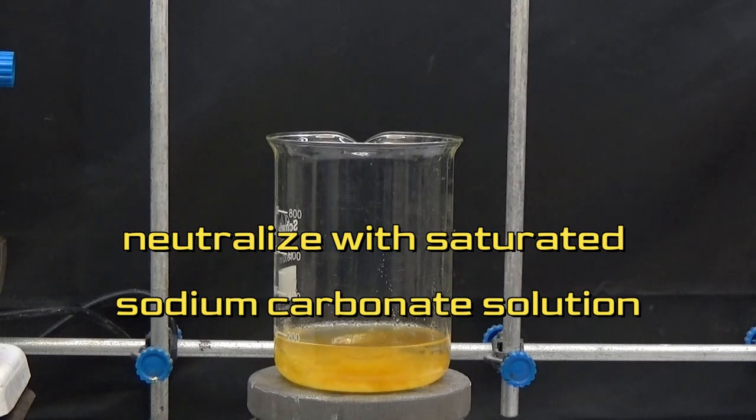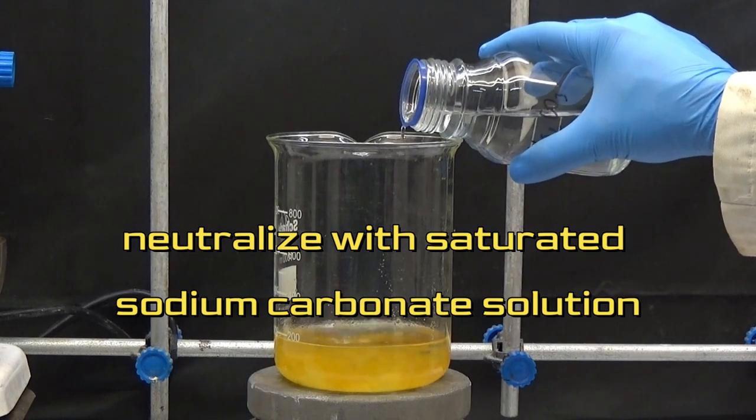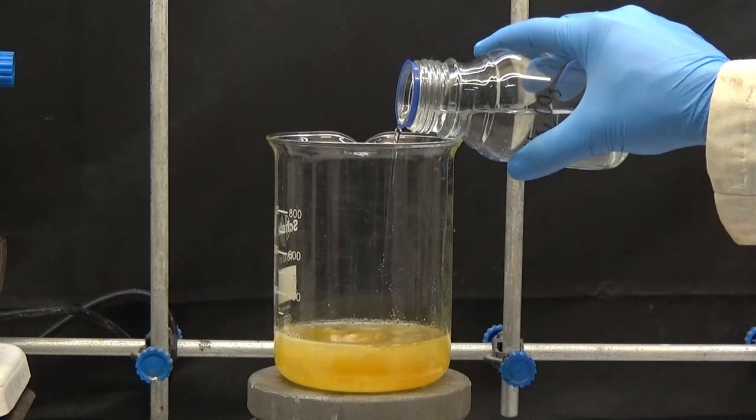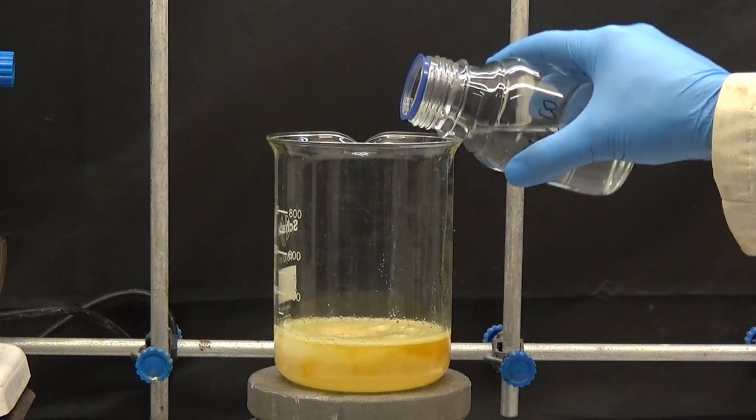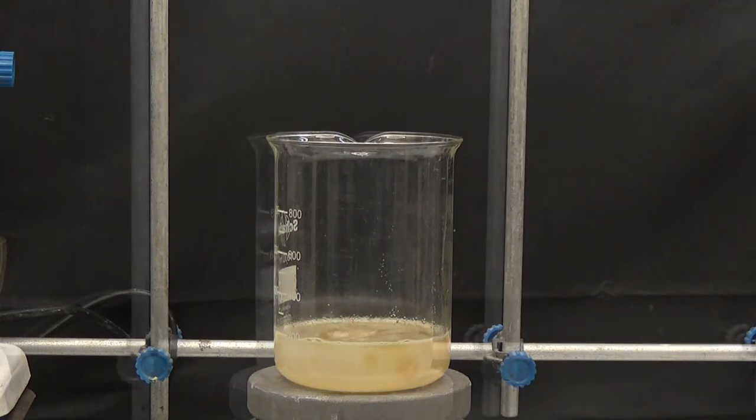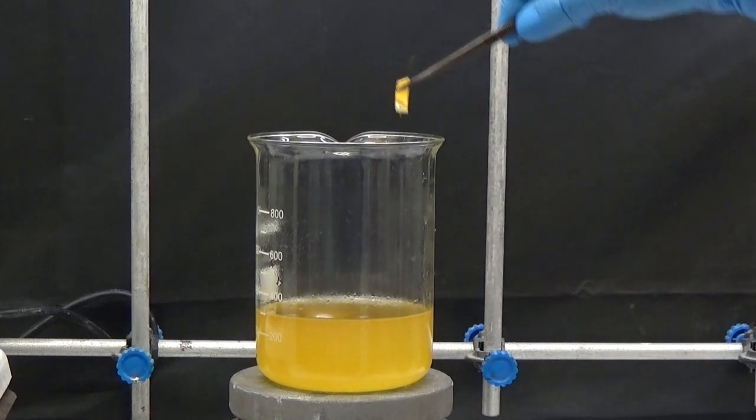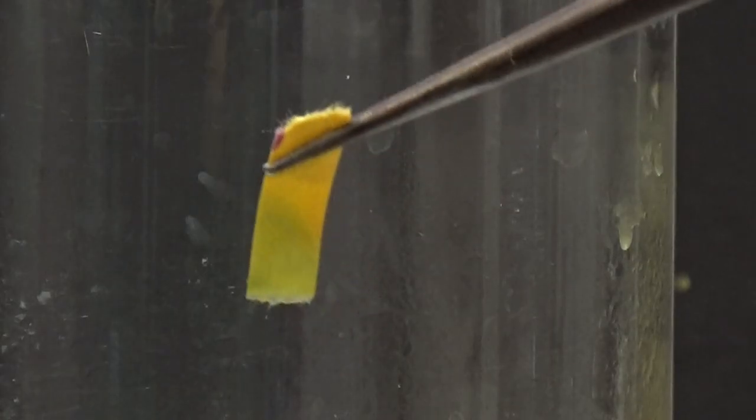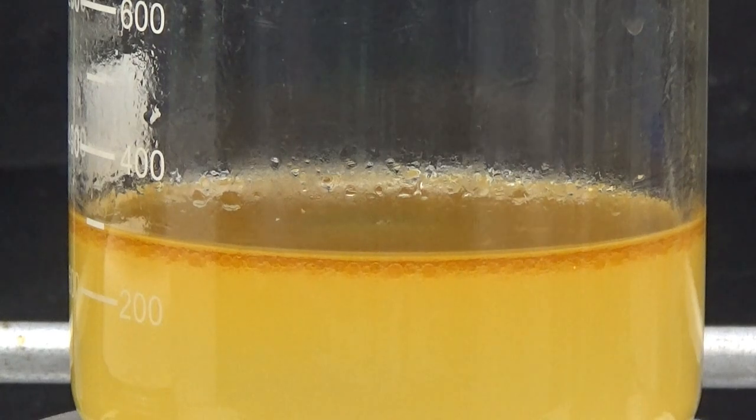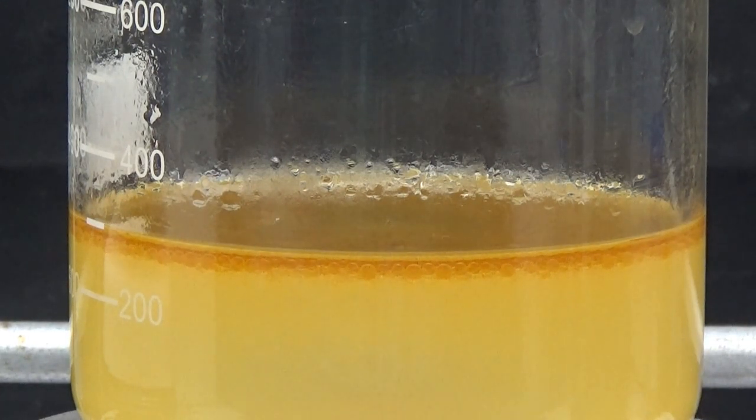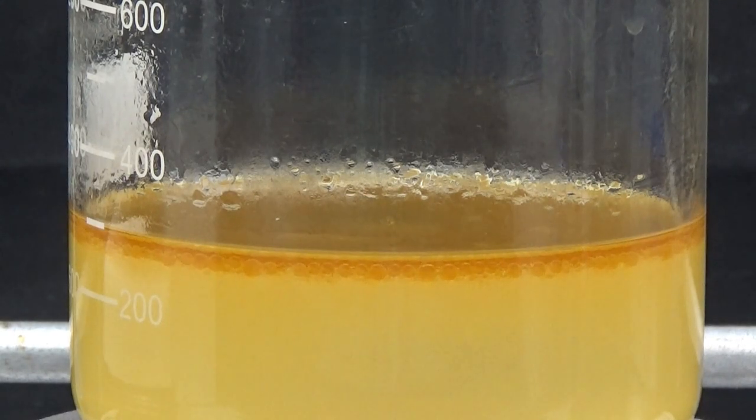Neutralize with saturated sodium carbonate solution at pH from 8 to 10. When neutralized, an oil floating layer is observed. That's the unreacted benzaldehyde.